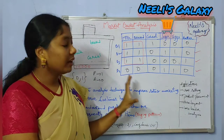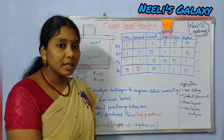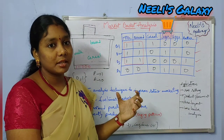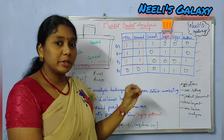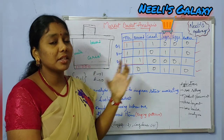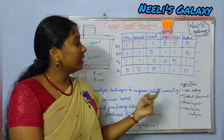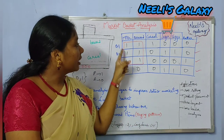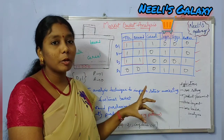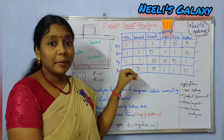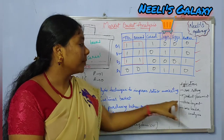This is all about market basket analysis. Coming to the applications, there are specifically four applications for market basket analysis. The first application is cross-selling. If you know that customers frequently purchase two products together, then when a customer purchases one product, you can automatically suggest the other product — because most customers tend to purchase them together.